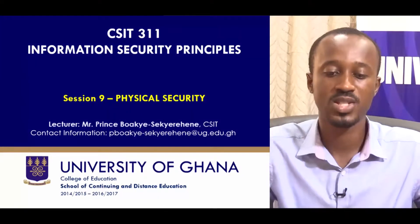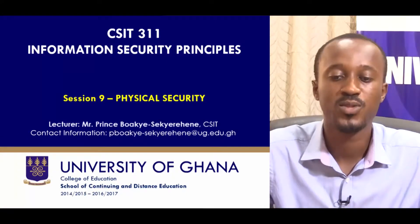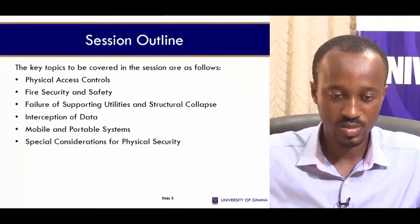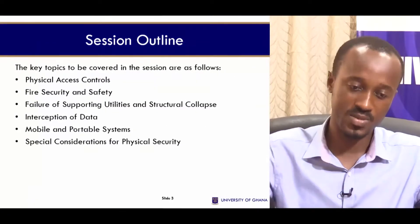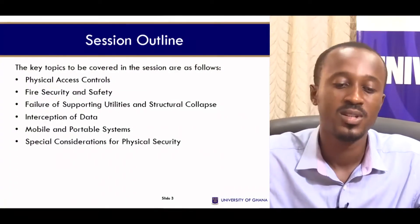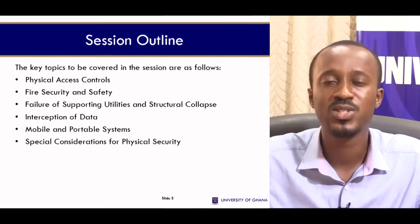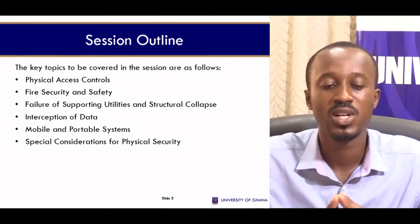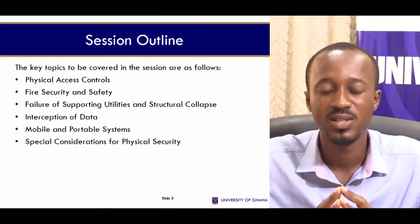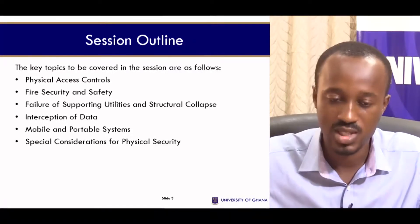Welcome to Session 9, Physical Security, under Information Security Principles. Under Physical Security, we will concern ourselves with physical access controls, fire security and safety. We will look at failure of supporting utilities and structural collapse, interception of data, mobile and portable systems, then end the session looking at certain special considerations for physical security.